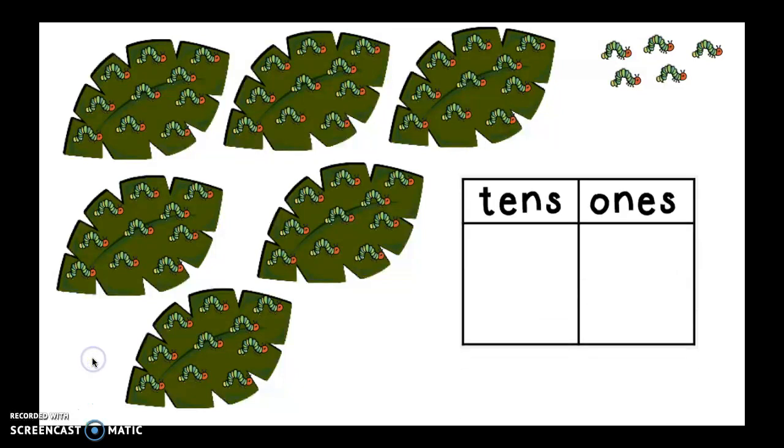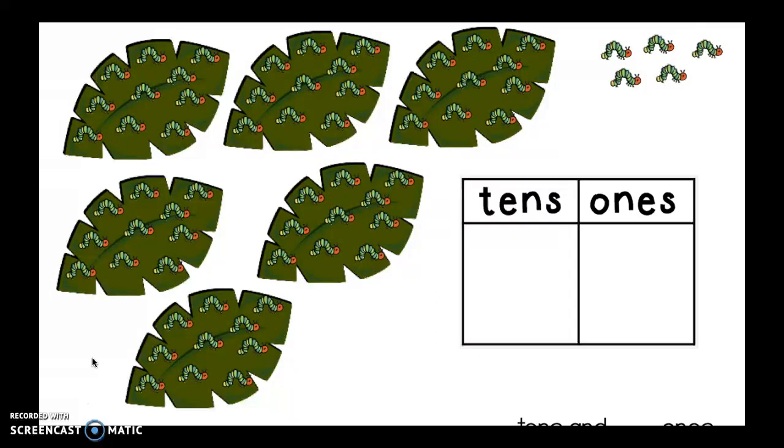Now, I don't really know what a group of caterpillars are called. Sorry. So, I just want to show you this. Here are the caterpillars. The ones on the leaves are groups of tens, of course. And then the other ones are the ones. I want you to go ahead and fill in this place value mat and then finish this number sentence. The regular way is equal to blank tens and blank ones. So, you're going to look at the picture, fill in your place value mat, and then fill in that number sentence at the bottom. Go ahead and send it to your teacher when you're done. Good luck, friends.